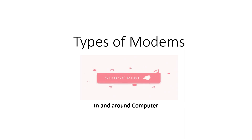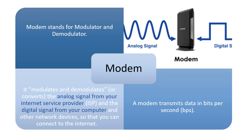In this video we are going to see the types of modems. Modem stands for modulator demodulator. This modem converts analog signals into digital signals and vice versa. The analog signals are from the internet service provider and the digital signals are from your computer and any other network device. As it modulates and demodulates the signals, you can connect to the internet. A modem transmits data in bits per second.